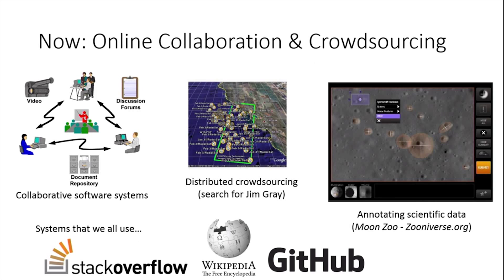If you come forward 50 years or so to now, there's a lot of examples of organization happening on the internet. We have collaborative software systems, there's crowdsourcing with a lot of people, there are scientific projects that use a lot of people to annotate and collect data. And then there are systems we all use like Stack Overflow, Wikipedia, and GitHub, which you can think of as big, organized systems of people working together.